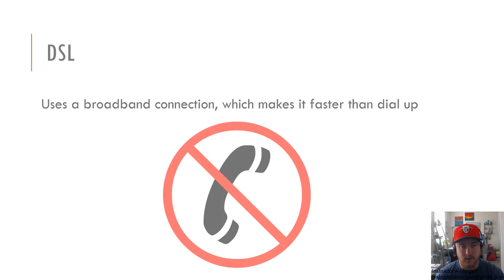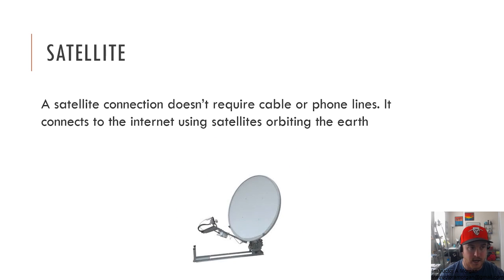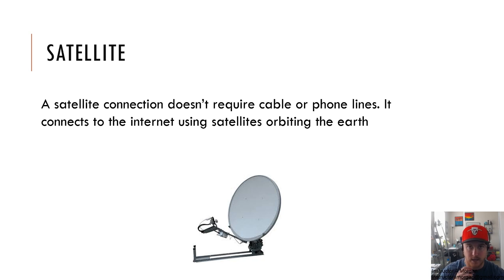Then DSL came out. DSL uses a broadband connection which makes it faster than dial-up, and the great thing was that you could use your phone at the same time. Beyond that, satellite internet is also available. It uses the satellites that orbit the earth and doesn't require cable or phone lines, which is nice, but if the weather gets bad that can disrupt your signal.